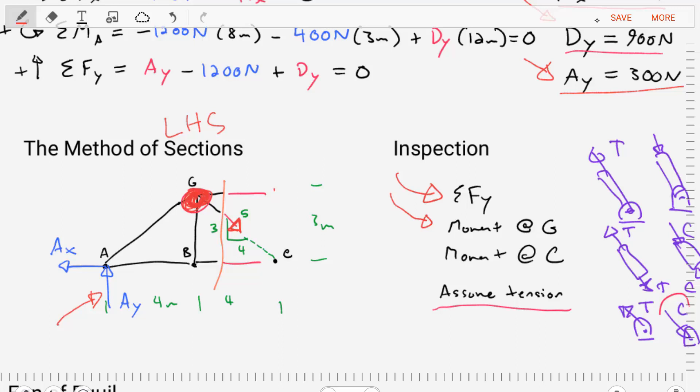Well, we know that since these two members here, since their line of actions go through point G, they won't cause a moment. So the only thing that could cause a moment, if we're doing a moment about point G, that we don't know, the only unknown, is going to be the force in BC.